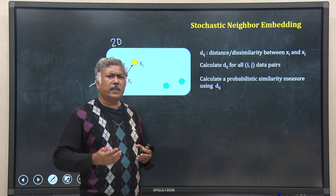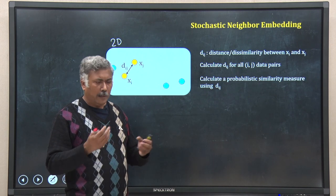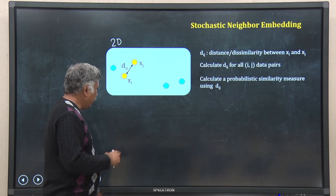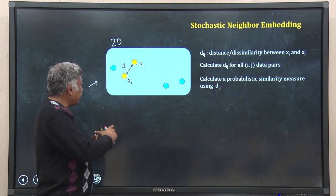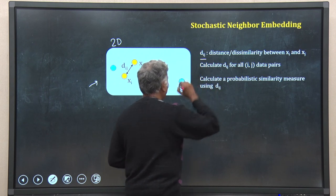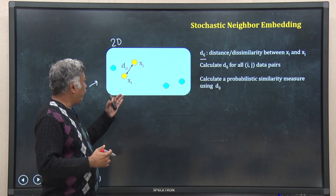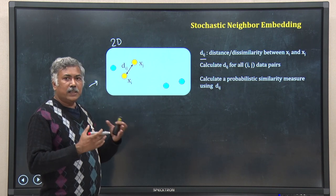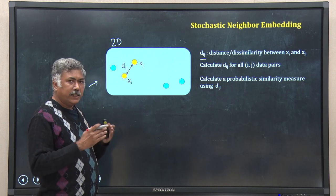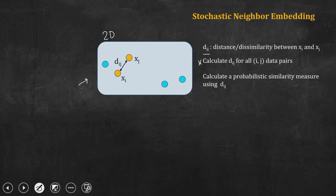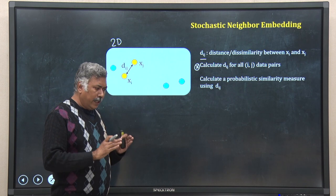Use some measure of distance or dissimilarity between data points — for example, you can use Euclidean or Mahalanobis distance, whatever is meaningful. Then you calculate the distance between x_i and x_j, and suppose that is d_ij. In this way, for 5 data points I can have 5 choose 2 = 10 pairs. So I calculate the pairwise distance or dissimilarity data.